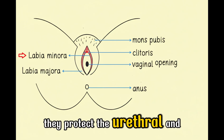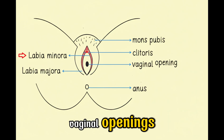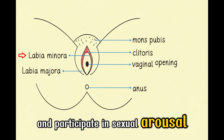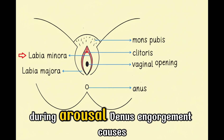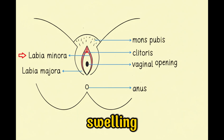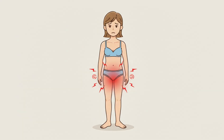They protect the urethral and vaginal openings and participate in sexual arousal. During arousal, venous engorgement causes swelling analogous to erectile tissue.